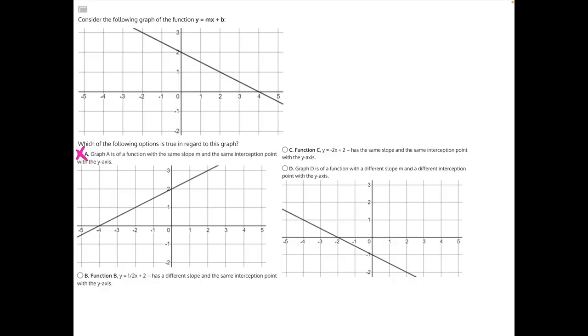For answer choice B, function B, y equals one half x plus two, has a different slope and the same interception point with the y-axis. The interception point is correct - our b equals positive 2, which matches our original function. But we don't know the slope of our original function, so we can't compare these two quite yet. We'll need to find our slope.